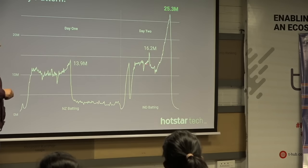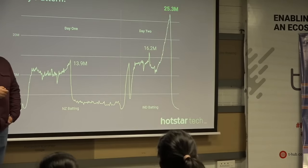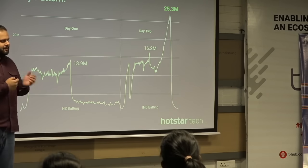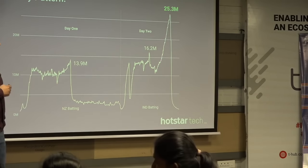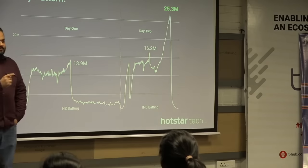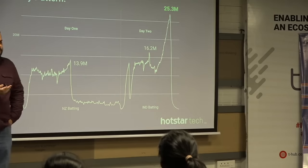This is the India batting. There were regular fall of wickets so the traffic did not grow that much, but then Dhoni came on to bat and was playing really well. Everyone was thinking India would win the match. That is when the marketing team started sending push notifications to bring on more users. The spike that you see is almost 1.1 million users being added to the platform per minute. Within a span of 10 minutes, we went from 13 million to 25 million — that is the scale we are talking about.